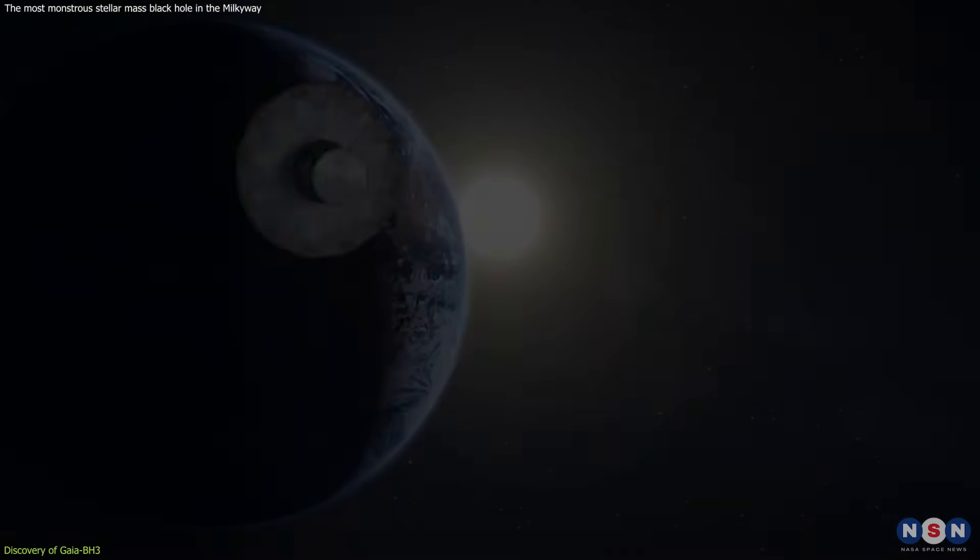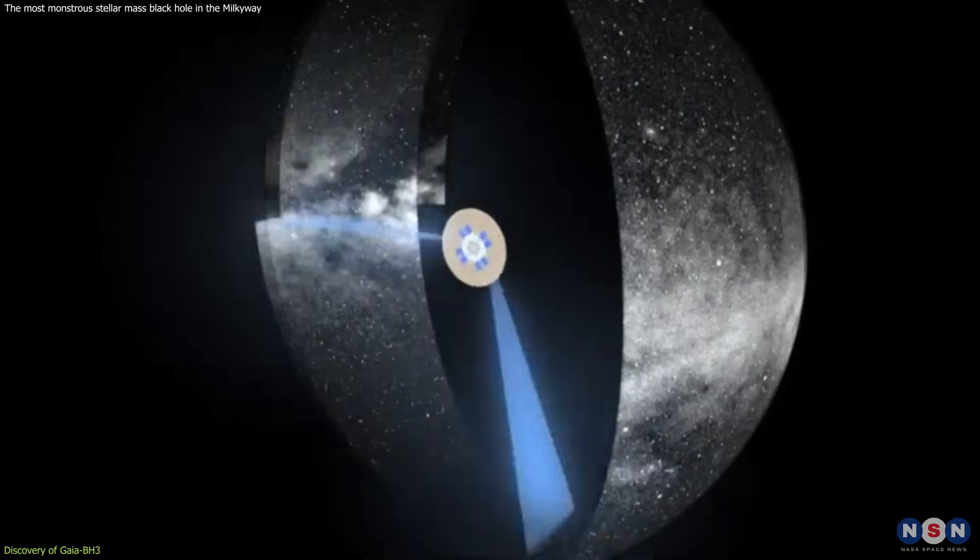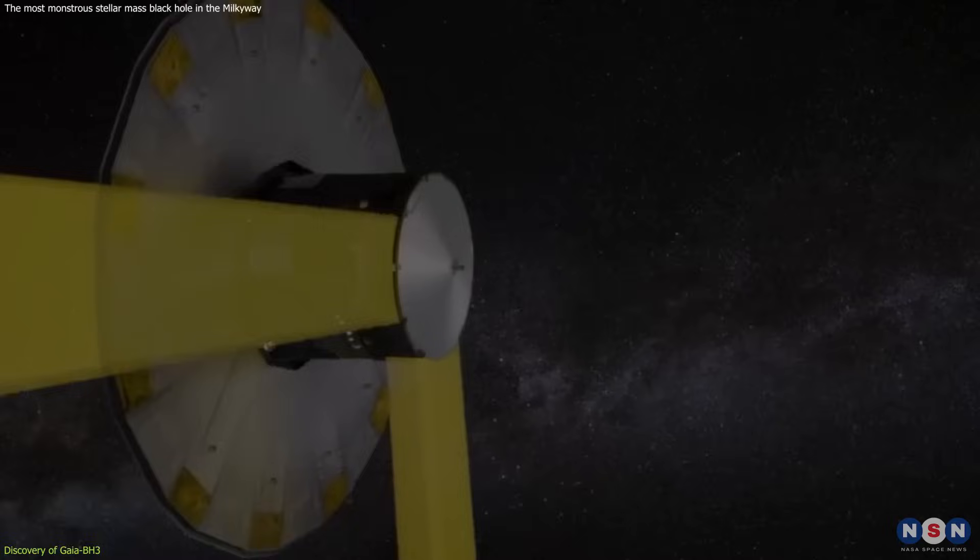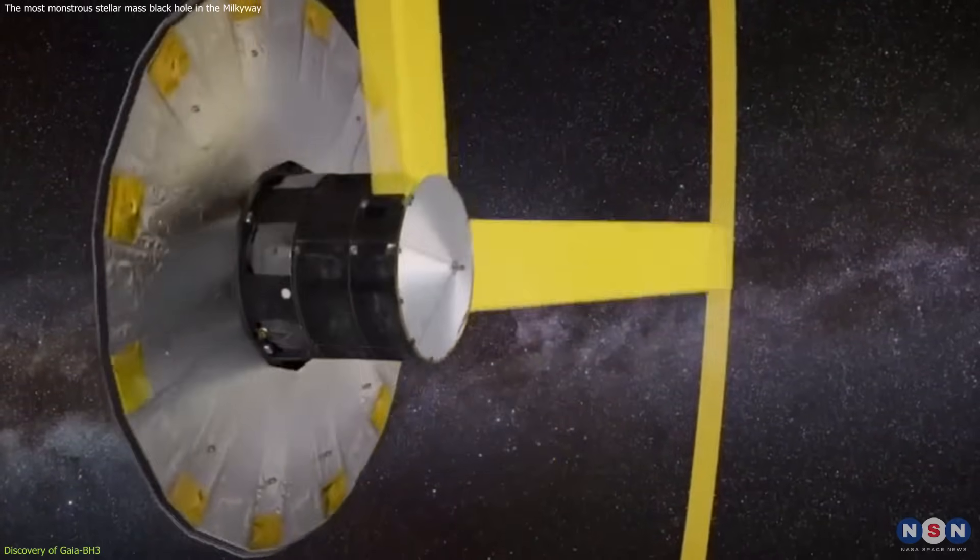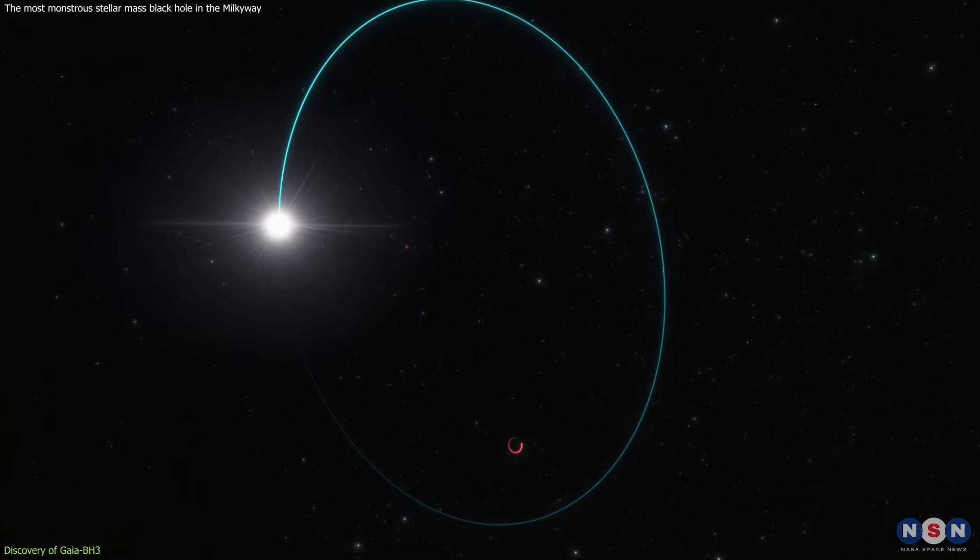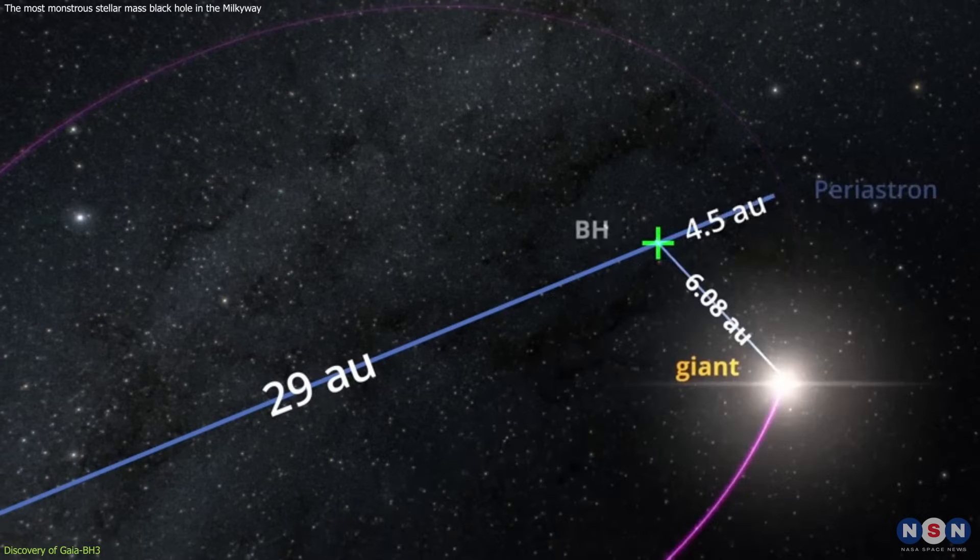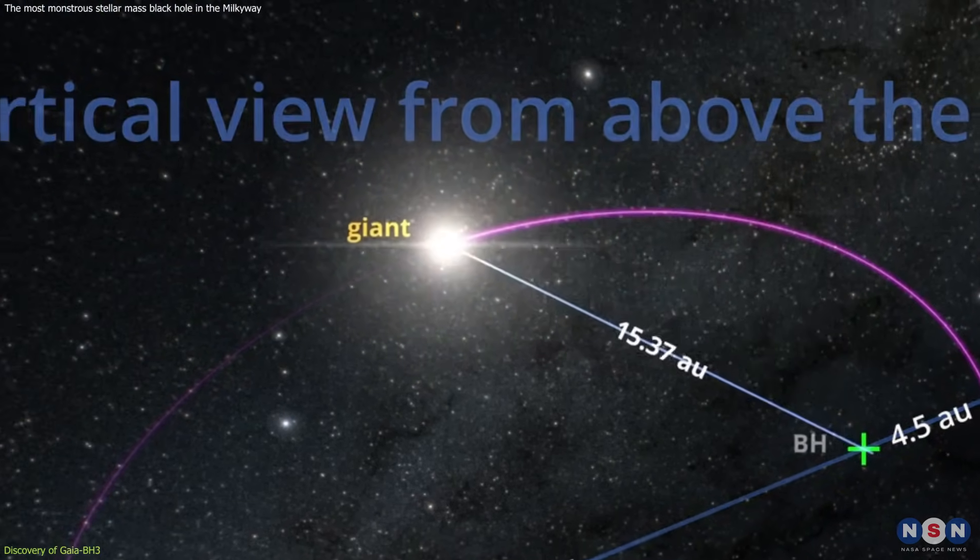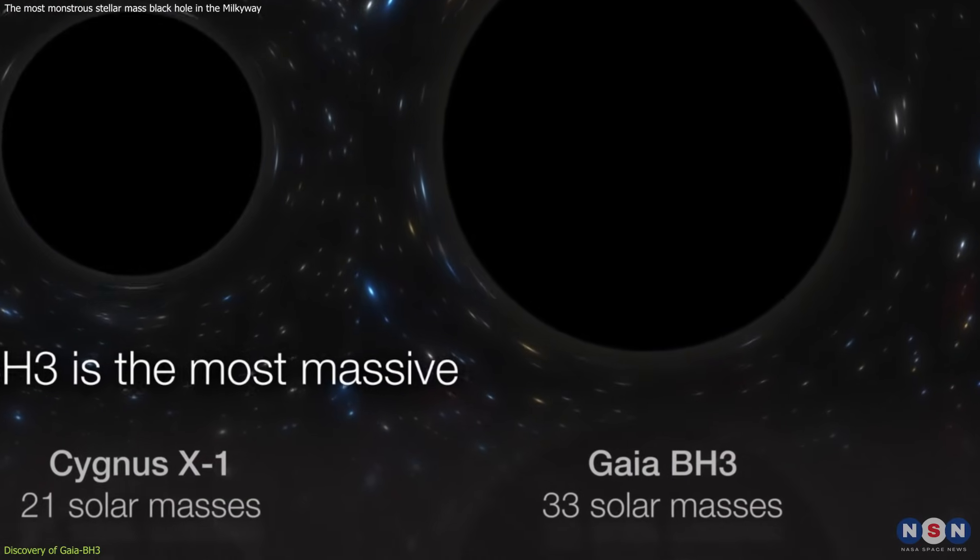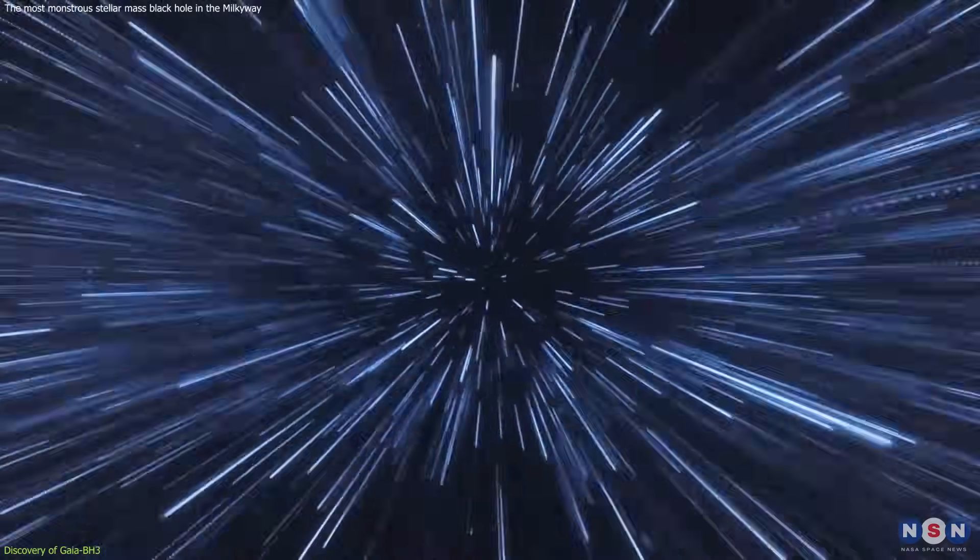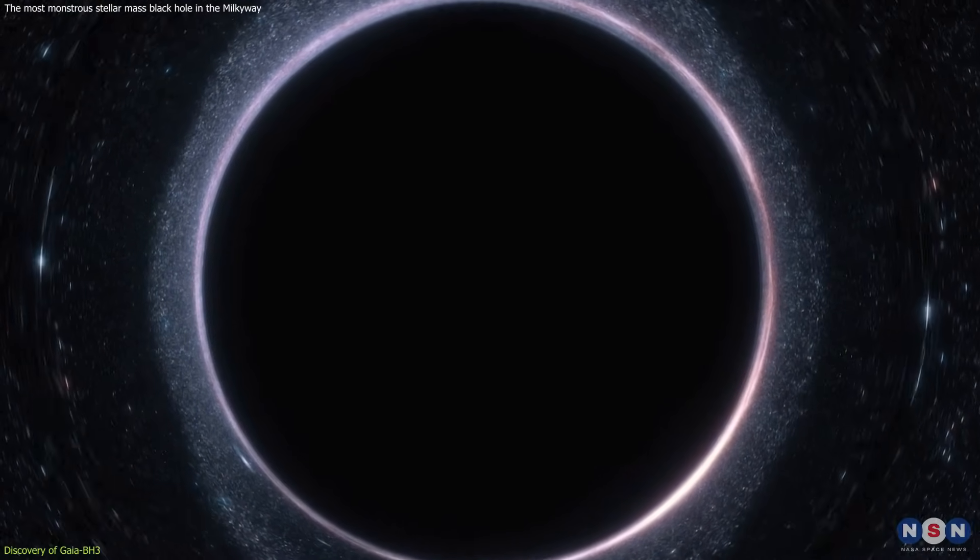Gaia's primary mission involves cataloging the astronomical positions and velocities of stars to create the most detailed 3D space map ever. However, it's Gaia's ability to notice the minutest perturbations and stellar movements that led to this extraordinary find. Gaia BH3 was identified not through direct observation, but by detecting the gravitational effects it exerted on its neighboring star. This method revealed a black hole 33 times the mass of our Sun, situated merely 2,000 light-years away, making it the most massive of its kind identified within our galactic neighborhood.